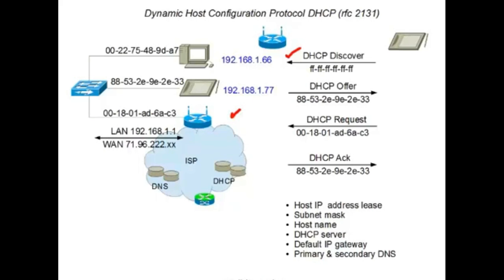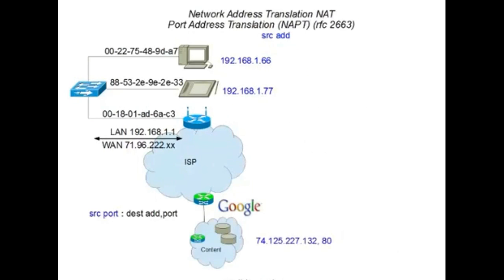ISPs don't necessarily configure routers this way, but it is a viable option for getting wide area network assignments. Now we have our local area network configured and we have private IP addresses for our tablet and our PCs, but we want to reach out to the internet in a public routing space in the wide area network. We can't use our private addresses for that, so how are we able to make requests into the internet with private addresses?